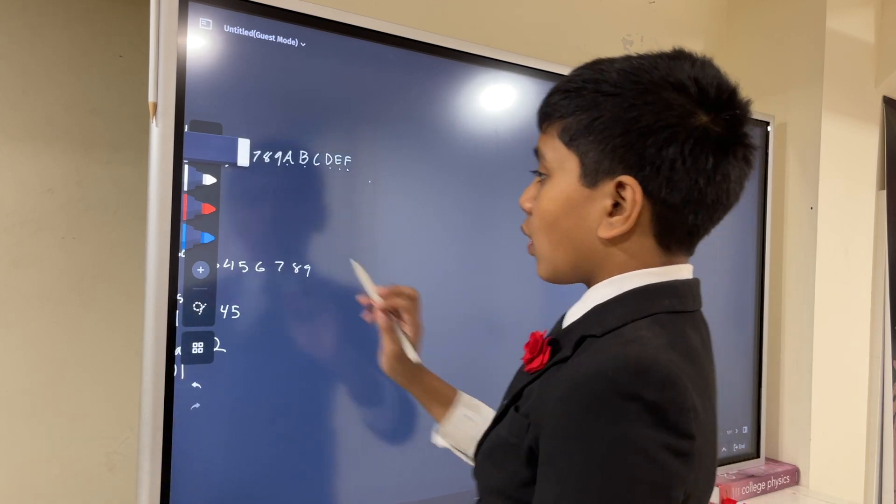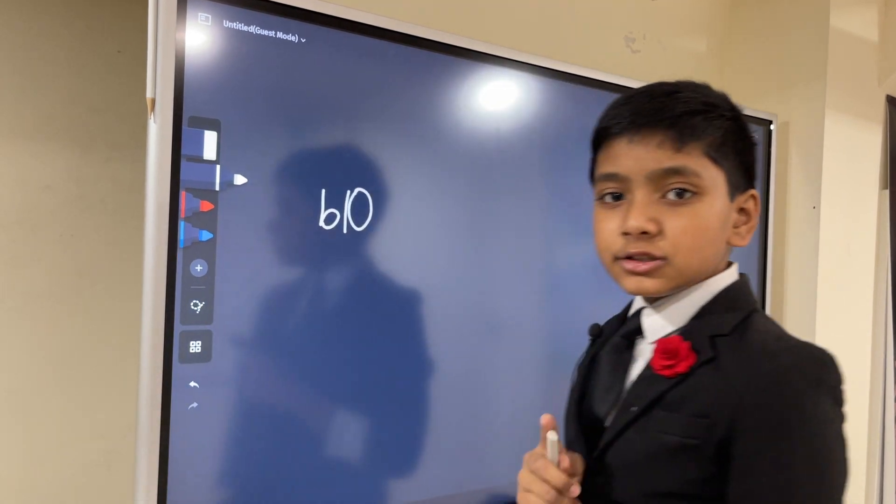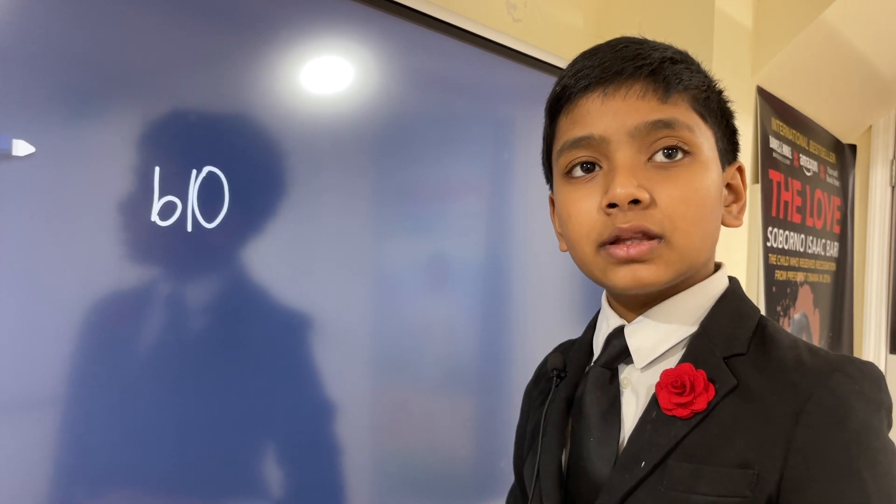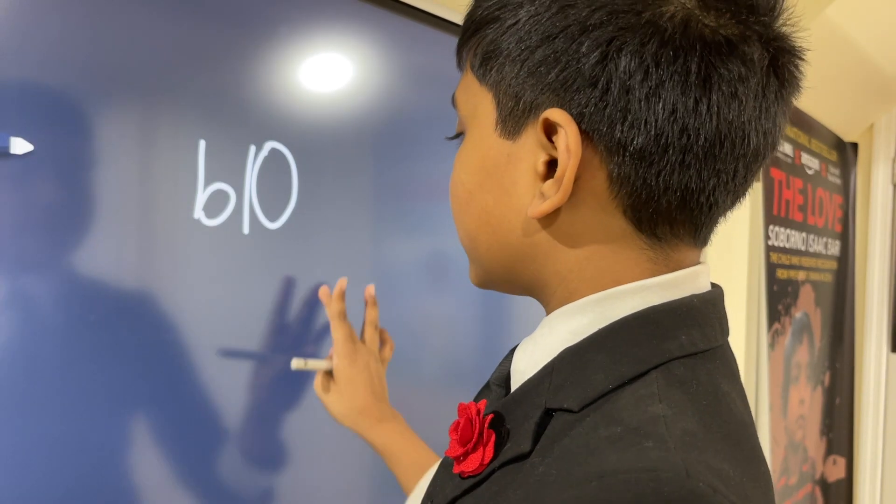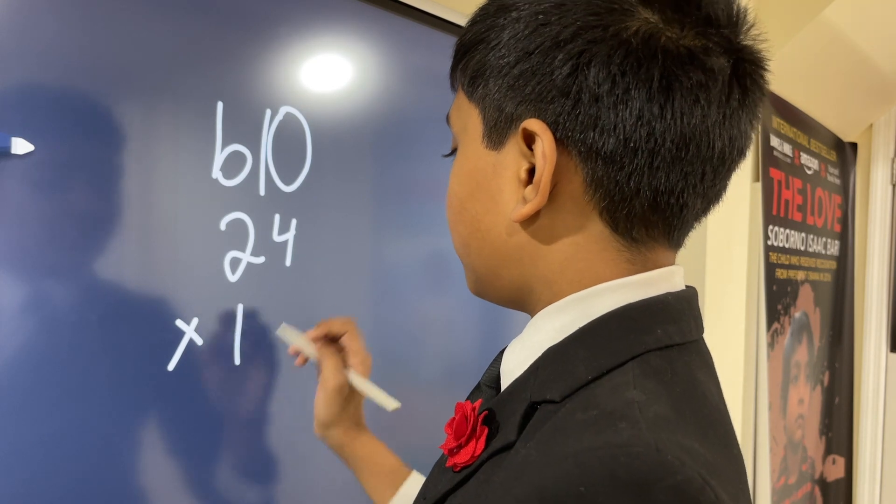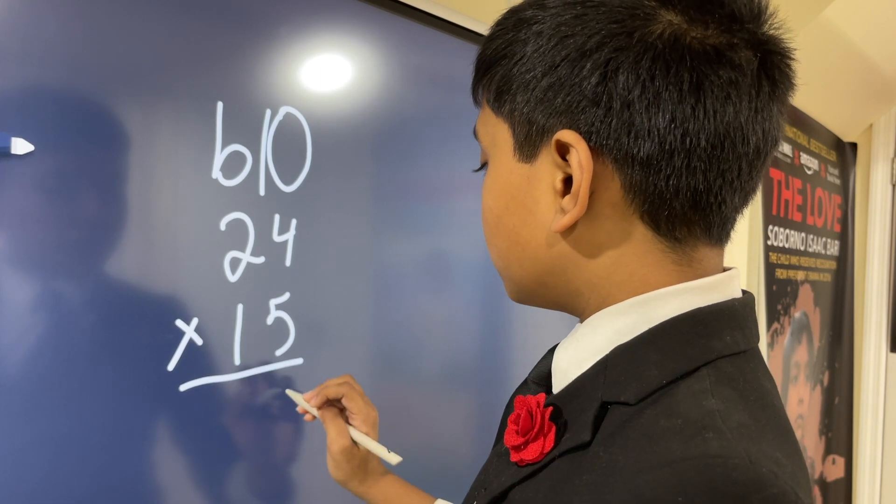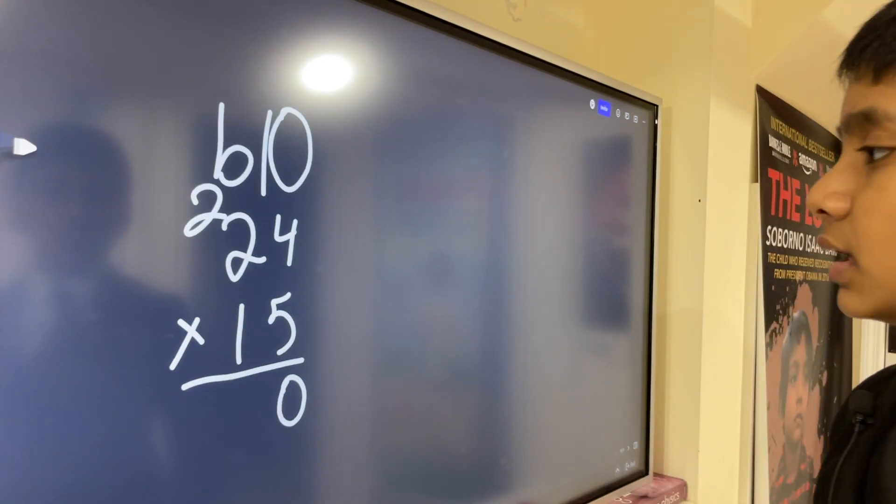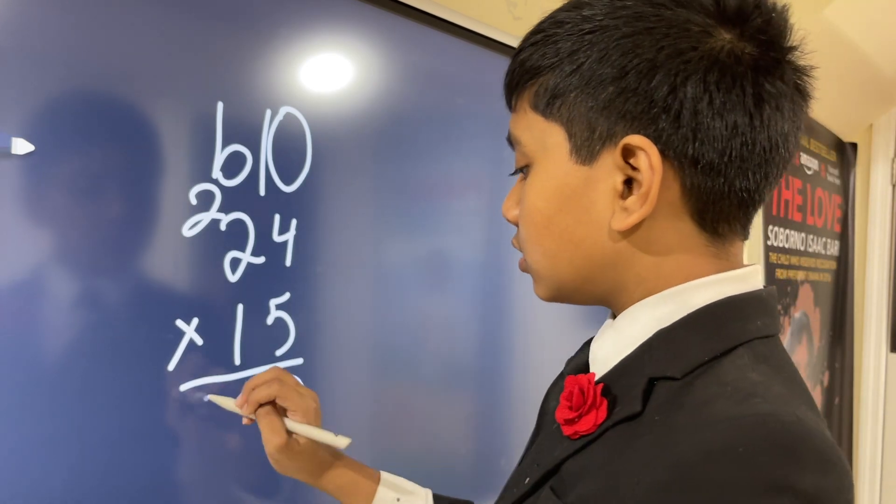I'm going to show you a few tricks for multiplication. They don't just apply to base multiplication but also to base 10 multiplication. Let's start with 24 times 15. 5 times 4 is 20, so you put 0 here and the extra digit, 2, up here. So we have 2 plus 5 times 2, which is 12.